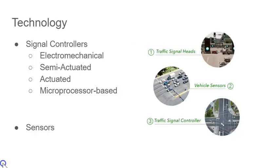Traffic signal controllers have been the mainstay of traffic technology since its genesis. Electromechanical controllers involve the use of gears and a timing dial to create cycle lengths in which intervals could be created. Actuated traffic signals are those that utilize sensors to activate a change in phase. Semi-actuated signals use a combination of pre-timed and actuated phases, and this is the mode that coordinated traffic signals are most commonly operated in.